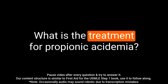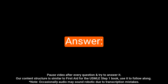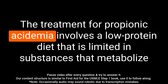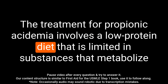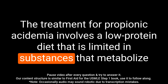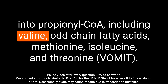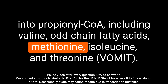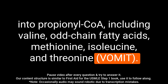Question: What is the treatment for propionic acidemia? Answer: The treatment for propionic acidemia involves a low-protein diet that is limited in substances that metabolize into propionyl CoA, including valine, odd-chain fatty acids, methionine, isoleucine, and threonine.